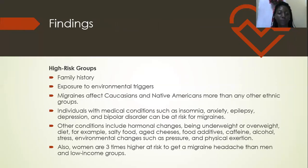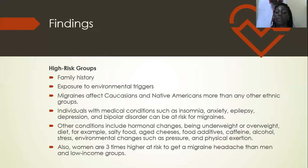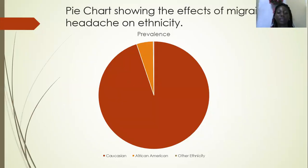Analysis — high risk groups: exposure to environmental factors triggers migraine headache. Migraine can affect Caucasians and Native Americans more than any other ethnic groups. Individuals with medical conditions such as insomnia, anxiety, and epilepsy are risk factors for migraine. Other conditions include hormonal changes, diet, and environmental changes. Women are three times more at risk than men, and low-income groups also fall in this category. A pie chart shows that Caucasians are highly affected with migraine headaches compared to African Americans and other ethnicities, including Chinese.